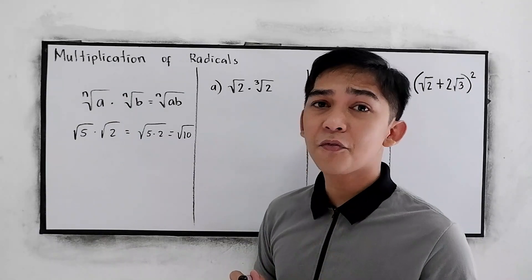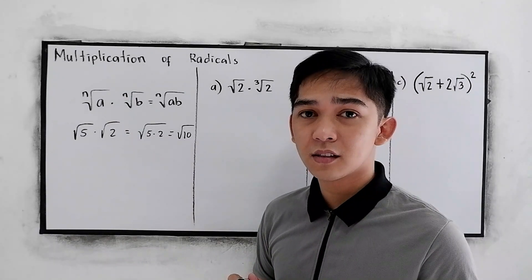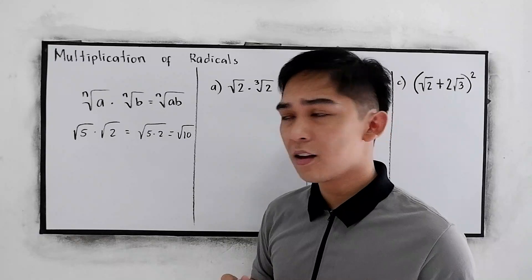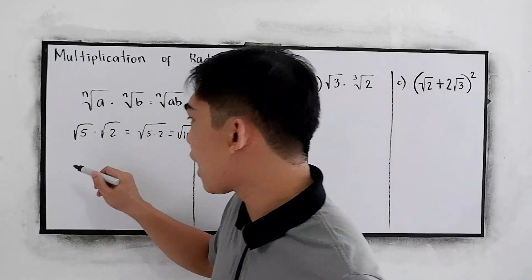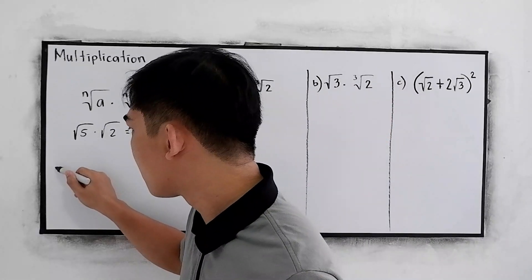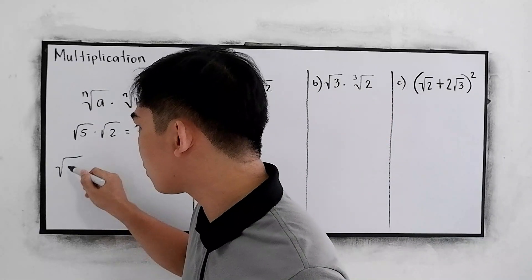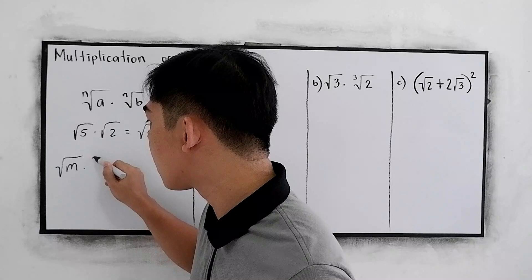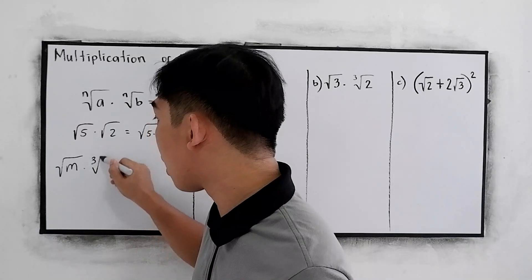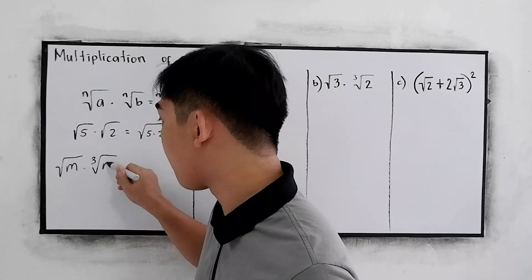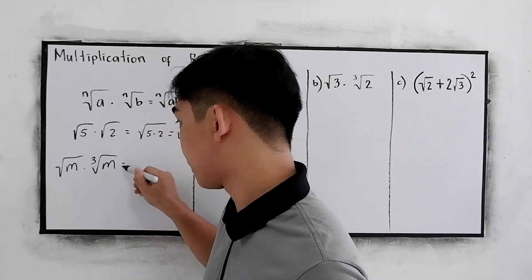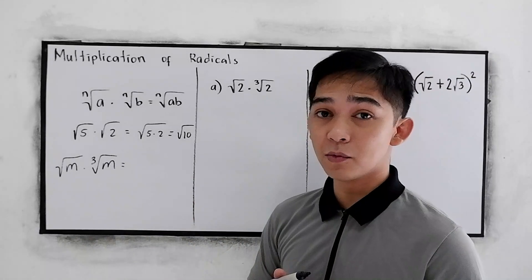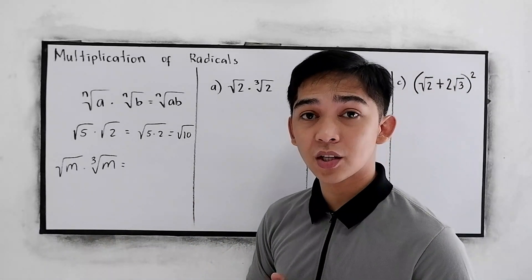What if we have different indices? Let's say we have square root of m times cube root of m. Is it possible that we're going to combine them using multiplication?